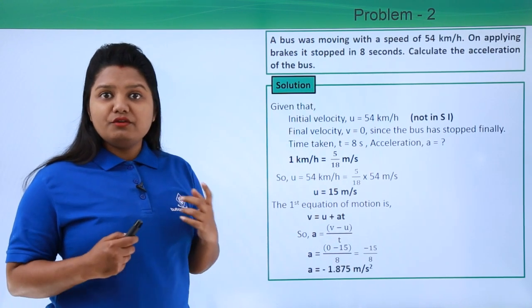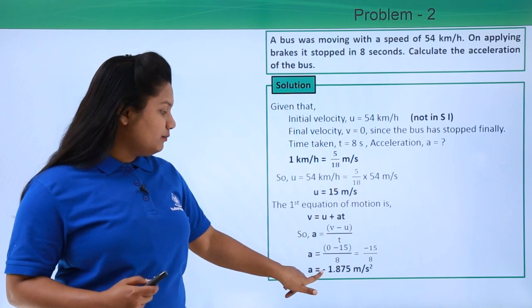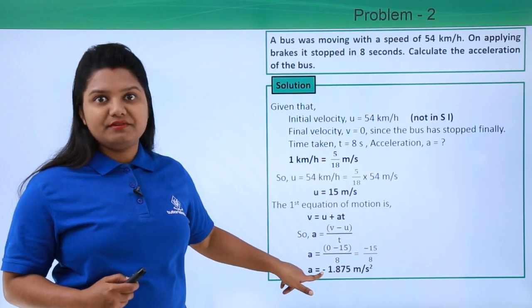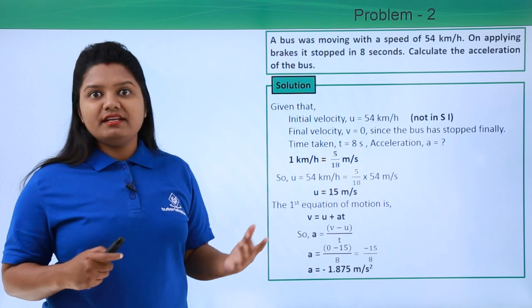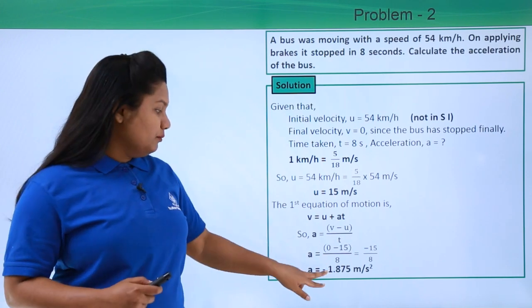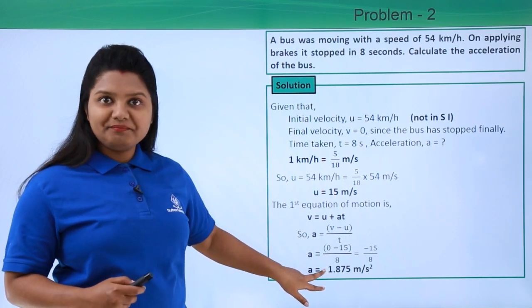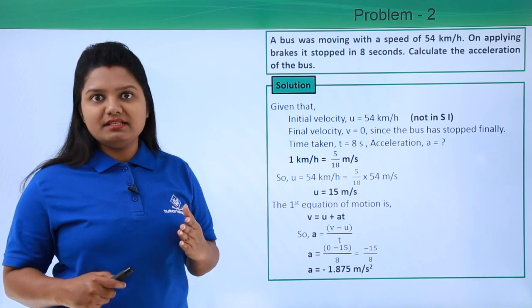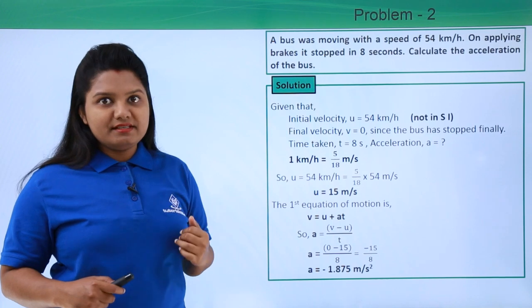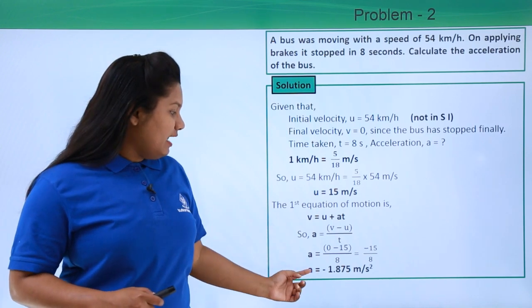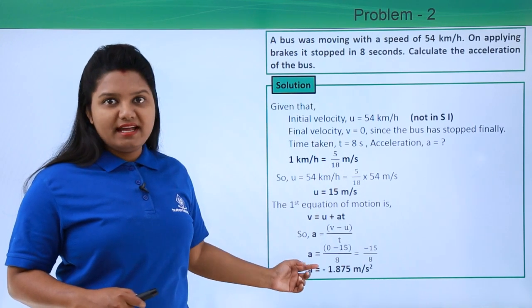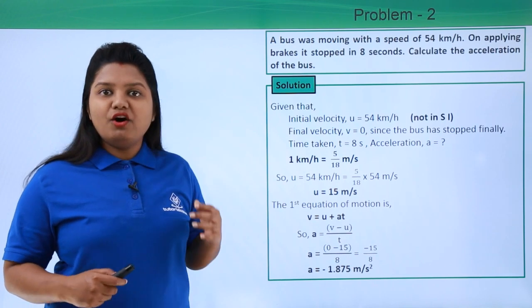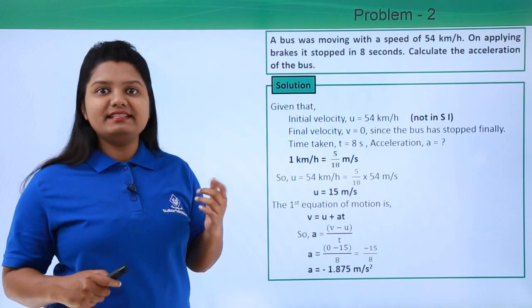Now you might be noticing a minus sign here in front of acceleration. We have already read what is the meaning of this negative sign. Whenever a body is decreasing its velocity and comes to stop at the end, then the acceleration is called as negative acceleration, or retardation, or deceleration.